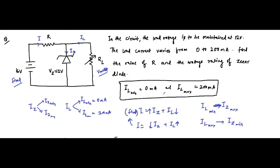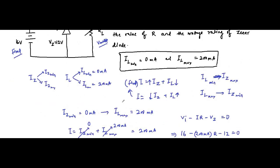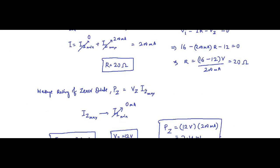You cannot use the minimum value of load current and minimum value of Zener current at the same time, because it can never happen. Minimum load current occurs when Zener current is maximum, and maximum load current occurs when Zener current is minimum. Both cannot be minimum simultaneously, nor both maximum simultaneously. These appropriate combinations are very important — if you use wrong combinations you will get wrong results.